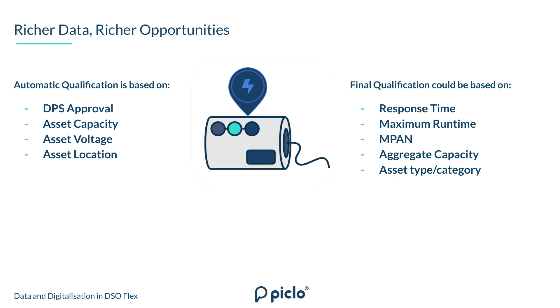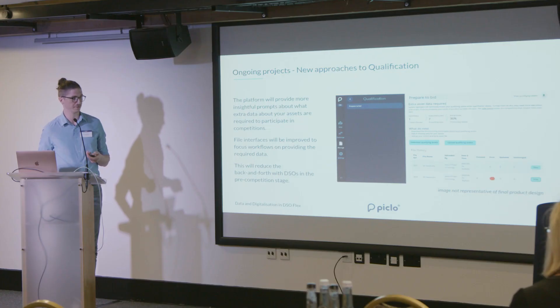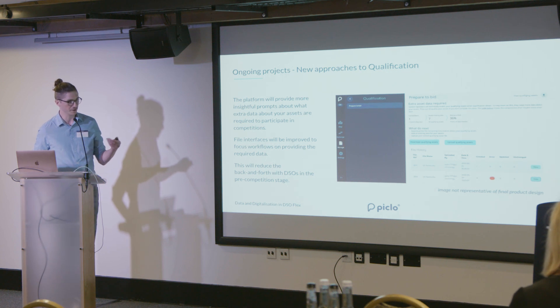The point I'm trying to make is that we really want you to maintain as rich asset data as you can on Piclo. We're really trying to encourage and support that. Coming in the next couple of quarters, next time you participate in a competition on Piclo Flex, you'll be able to be drawn to the completeness of your asset data and make sure you've got the right information there — reducing the back and forth you're doing with the system operator.